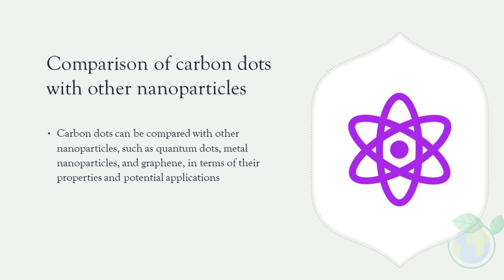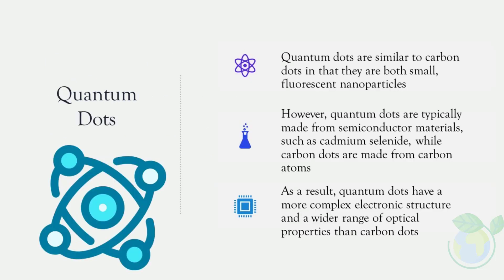Comparison of carbon dots with other nanoparticles. Carbon dots can be compared with other nanoparticles, such as quantum dots, metal nanoparticles, and graphene, in terms of their properties and potential applications. Quantum dots are similar to carbon dots in that they are both small, fluorescent nanoparticles. However, quantum dots are typically made from semiconductor materials such as cadmium selenide, while carbon dots are made from carbon atoms. As a result, quantum dots have a more complex electronic structure, a wider range of optical properties, and a higher toxicity level than carbon dots.